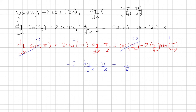I can cancel out the π/2's and the negatives from both sides. So I have 2 times dy/dx equals 1, therefore dy/dx equals 1/2. And that is the answer.